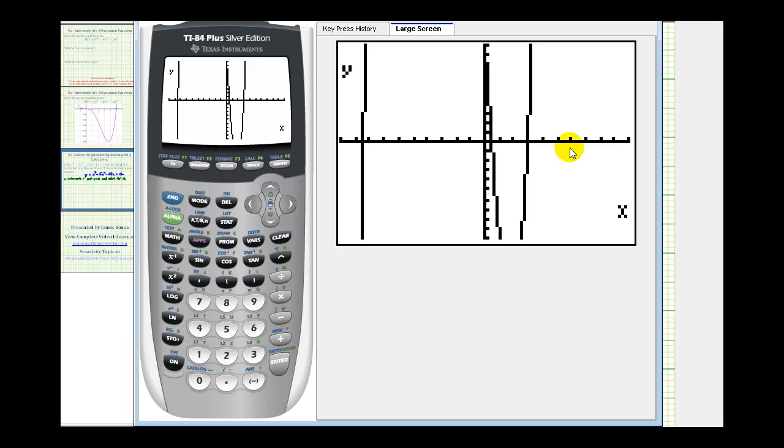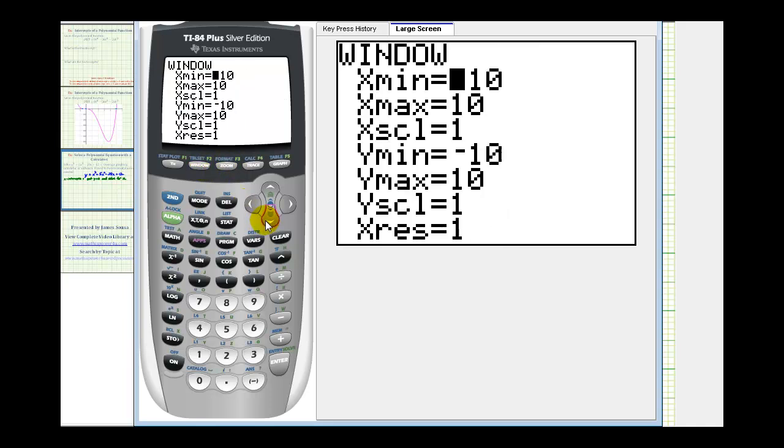So we could use this window, but I'm going to go ahead and adjust it so we get a better picture of the graph. I've already done some trial and error here. I'm going to change the y minimum to negative 50 and the y maximum to 200.